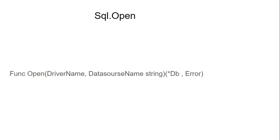In the open function we have two parameters. The first is the driver name, and the next one is the data source name. Driver name means which driver we want to connect — for example, if I want to connect MySQL or PostgreSQL, I can mention that in place of driver name. The data source name is the connection string to the database, which includes username, password, IP address, port, and database name.